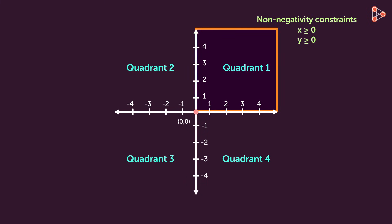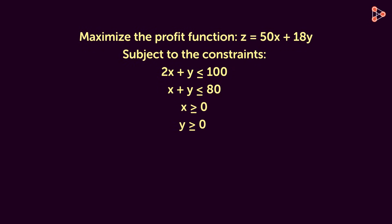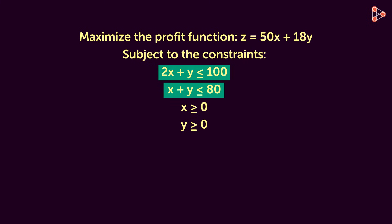For better understanding, let's solve this linear programming problem graphically. In this problem, we need to find the maximum profit which is denoted by the objective function z = 50x + 18y. So let us find the values of x and y which satisfy these linear inequalities.